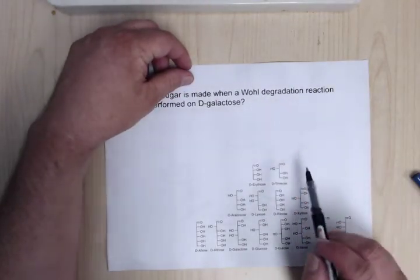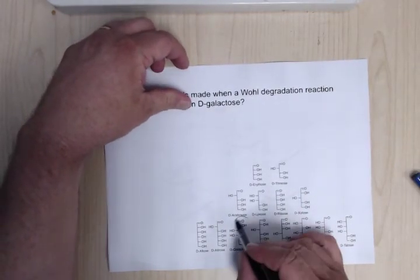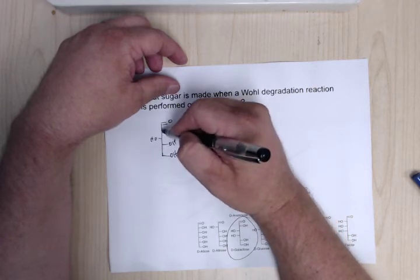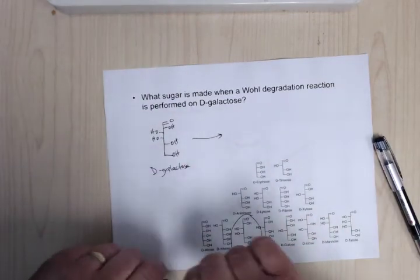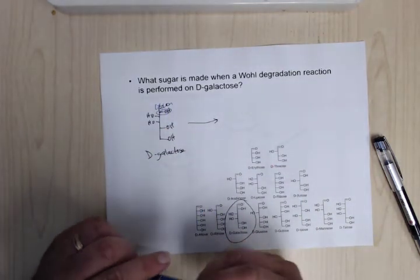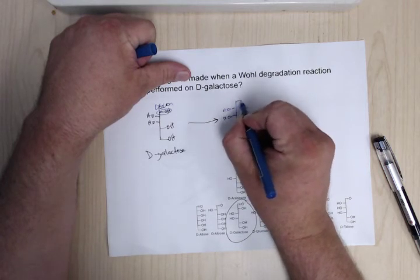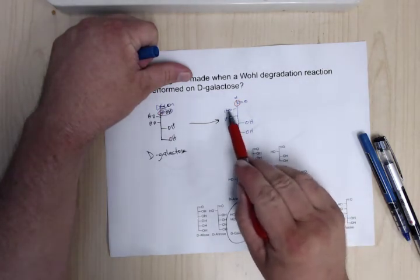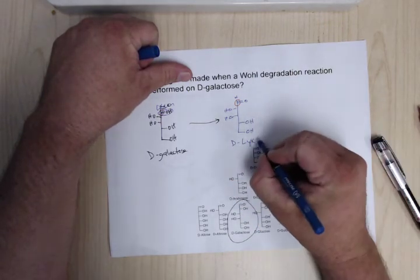For the Wohl degradation, we're chopping off the top carbon and making the next one the new aldehyde. Starting from D-galactose on the chart, after degradation the top carbon is removed and the second carbon becomes the aldehyde. Following the chart, you end up with D-glucose as the product.